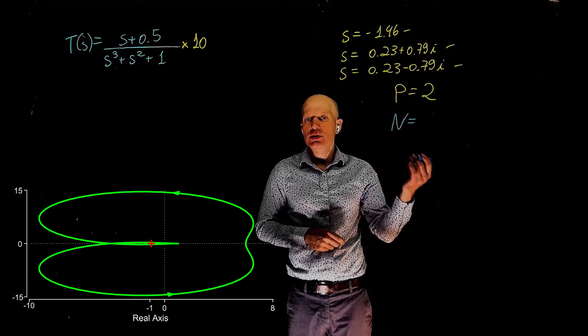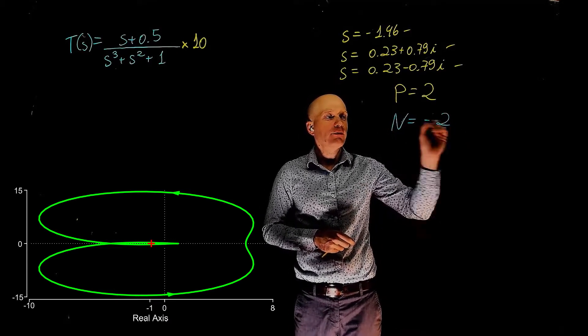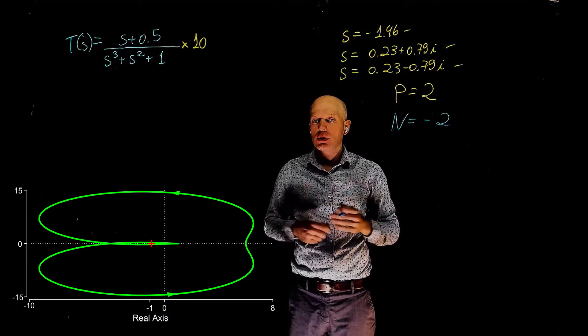Hence, the number of encirclements is 2, and the sign is negative because we have counterclockwise encirclements.